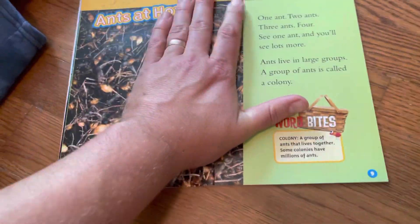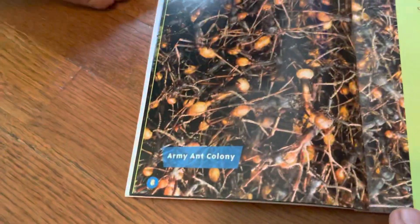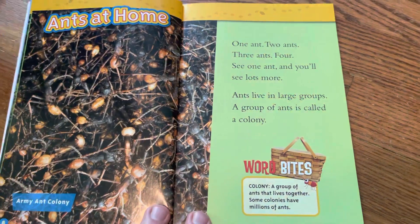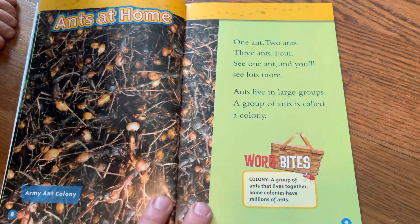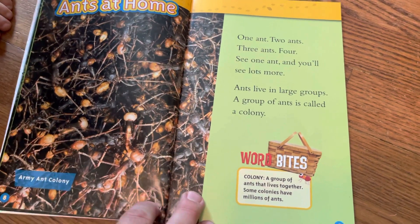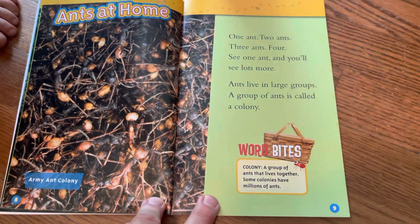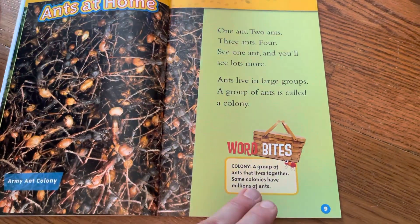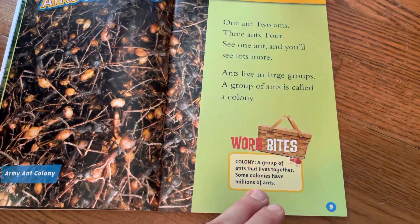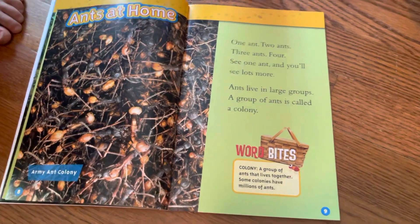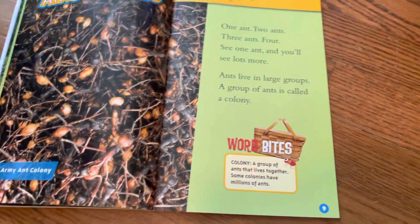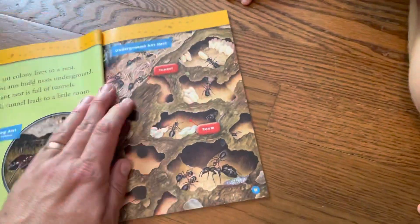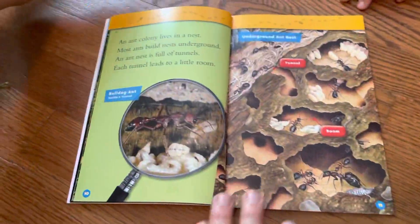Ants at home. This is an army ant colony — one and two and three and four. See one ant and you'll see lots more. Ants live in large groups called a colony. A colony is a group of ants that live together. Some colonies have one million ants, or sometimes millions of ants. There's what a colony looks like.